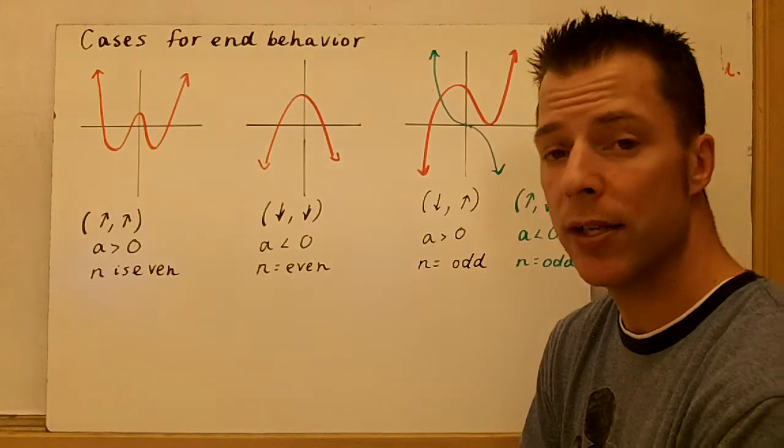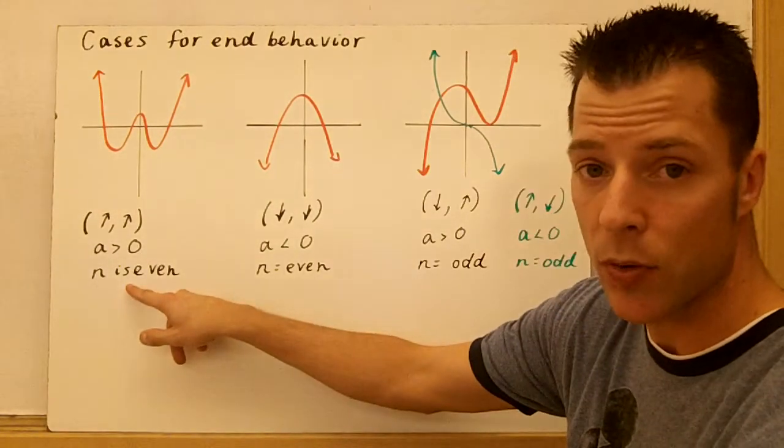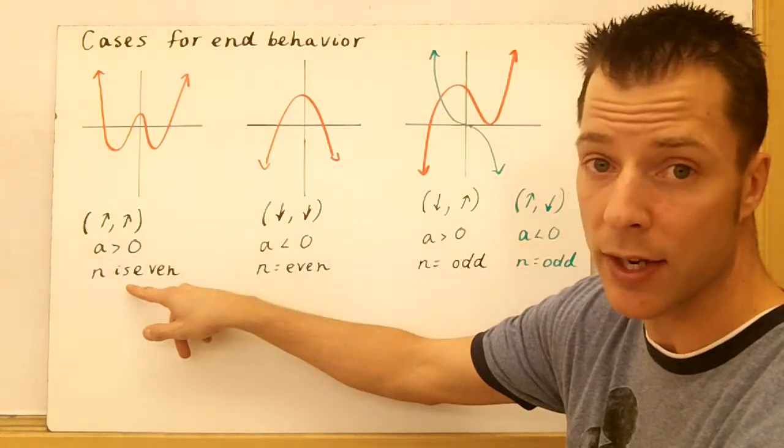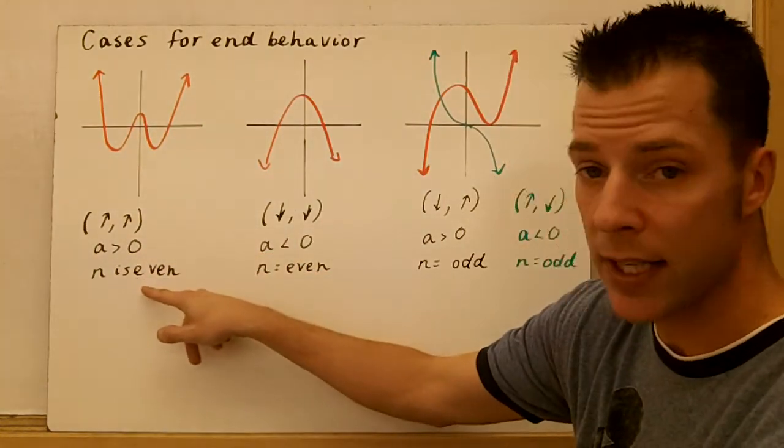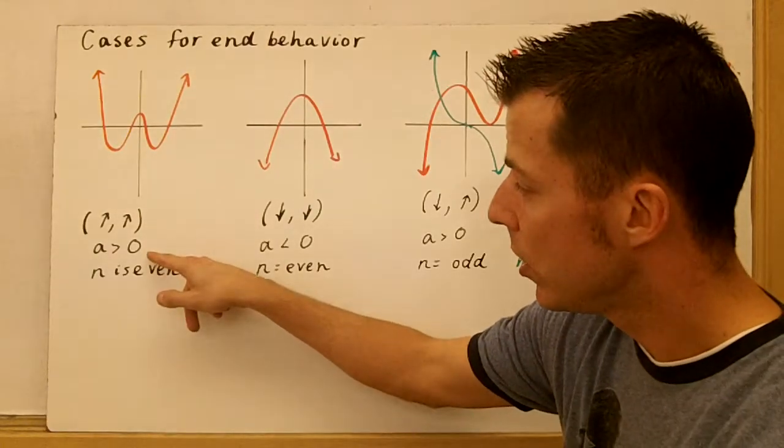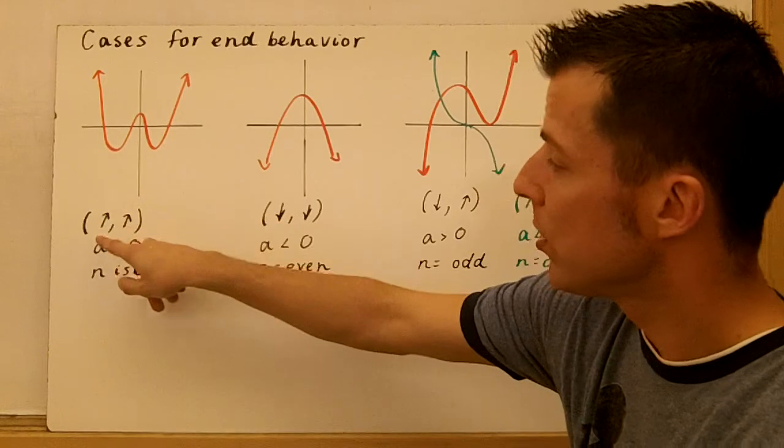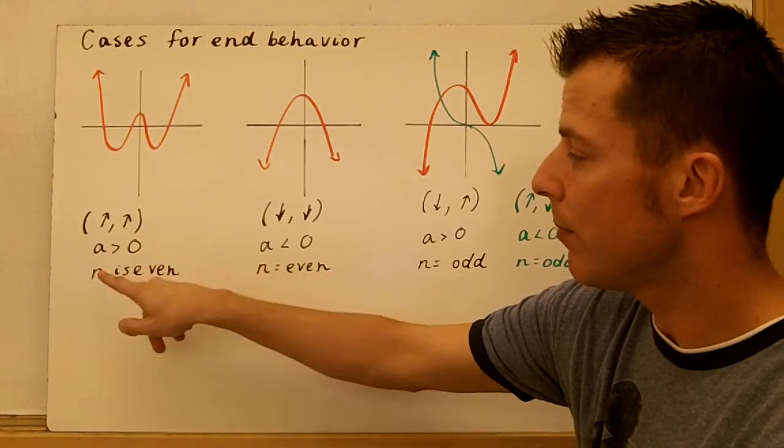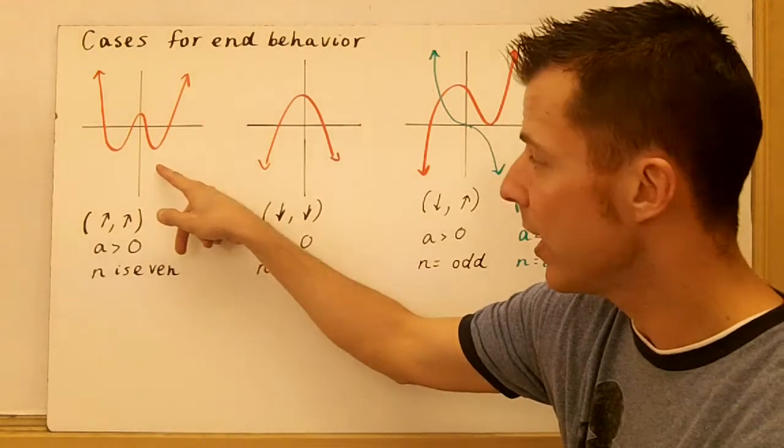The easiest case is when your leading coefficient's positive and the degree is even, like a quadratic with x or a equal one. So when a is greater than zero, positive, and n is even, when those two things are true, you have an up-up. And you can signify that with two arrows going up, or you can just say up-up. But that is an end behavior that's up-up.